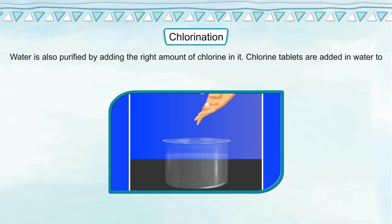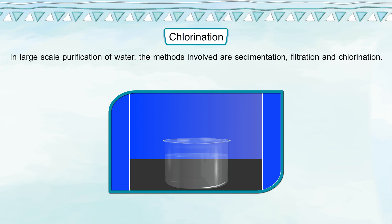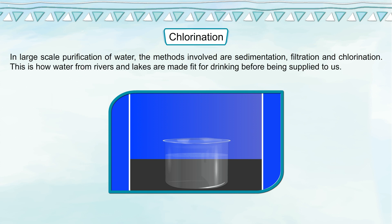Chlorination: water is also purified by adding the right amount of chlorine in it. Chlorine tablets are added in water to kill germs and make it fit for drinking. In large-scale purification of water, the methods involved are sedimentation, filtration and chlorination. This is how water from rivers and lakes is made fit for drinking before being supplied to us.